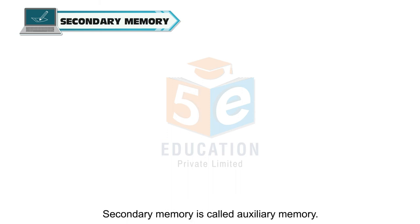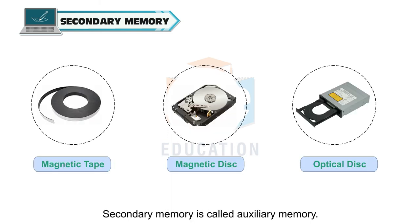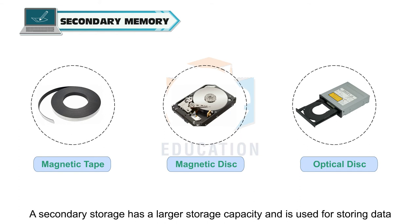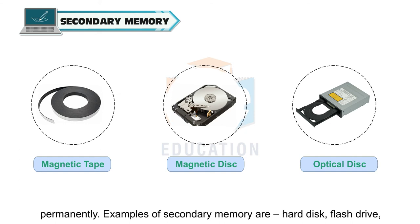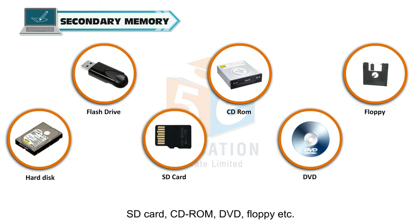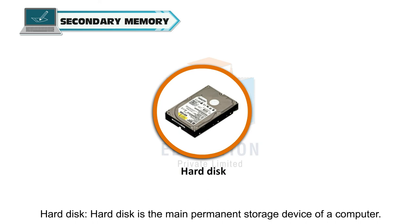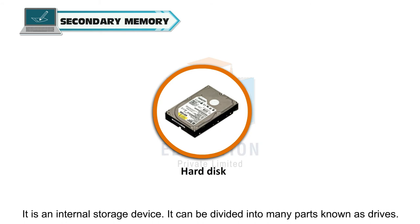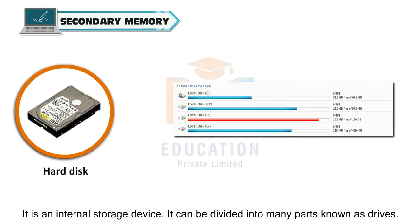Secondary memory is called auxiliary memory. It has a larger storage capacity and is used for storing data permanently. Examples of secondary memory are hard disk, flash drive, SD card, CD-ROM, DVD, floppy, etc. Hard disk is the main permanent storage device of a computer. It is an internal storage device and can be divided into many parts known as drives.